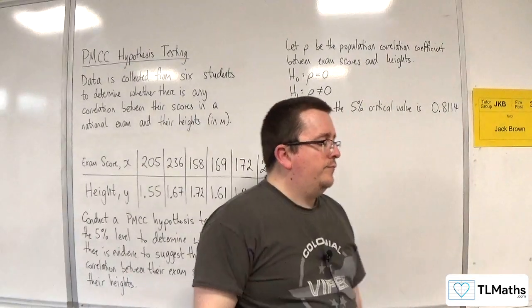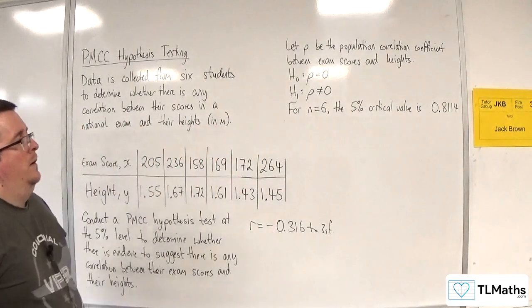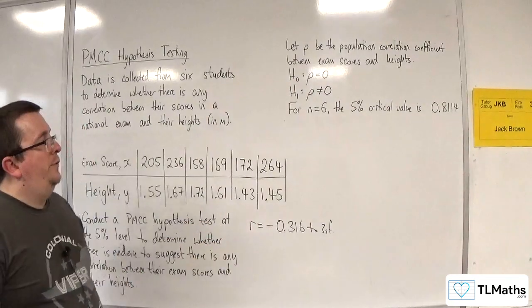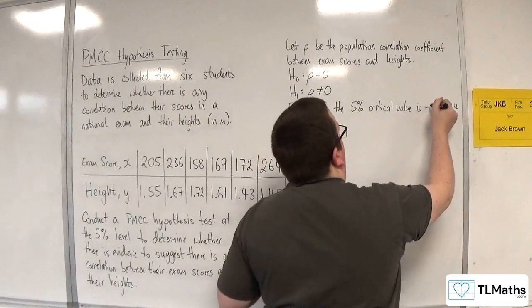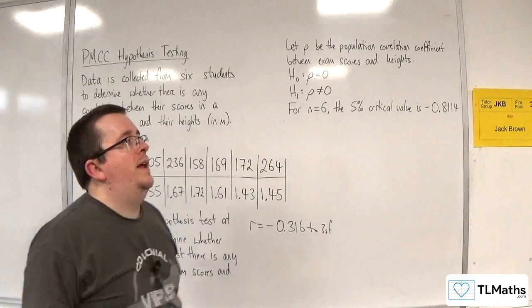Because the tables don't show negative values, we're going to be comparing this against the negative value here. Our critical value that we want to use is the negative 0.8114.